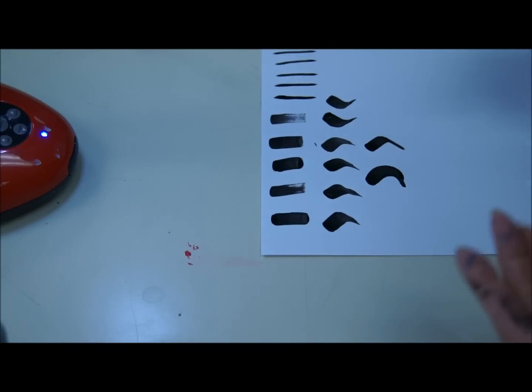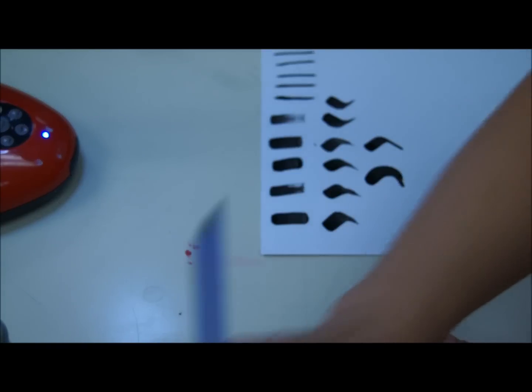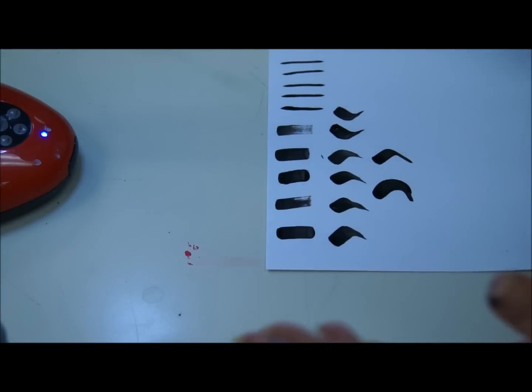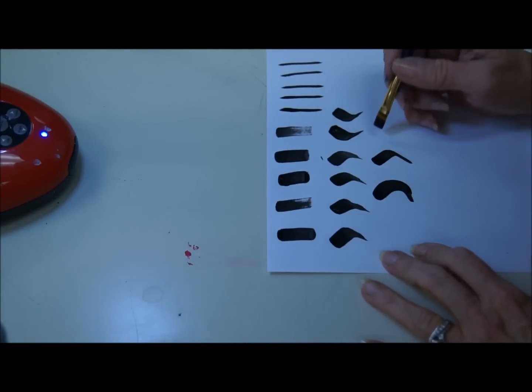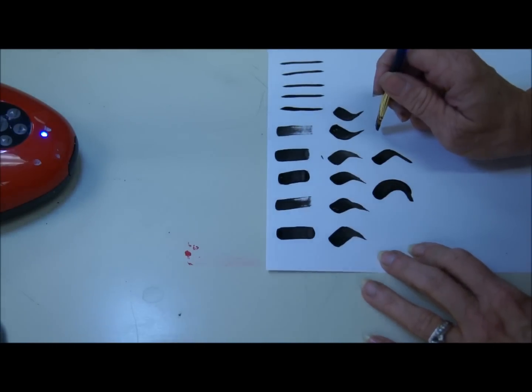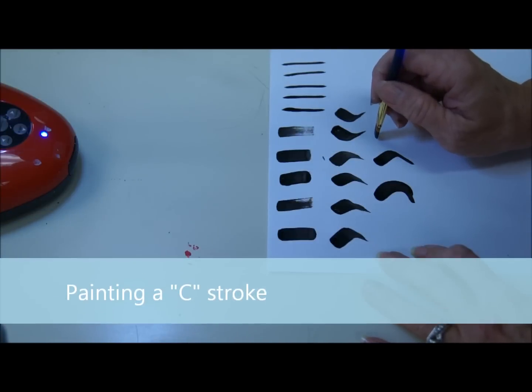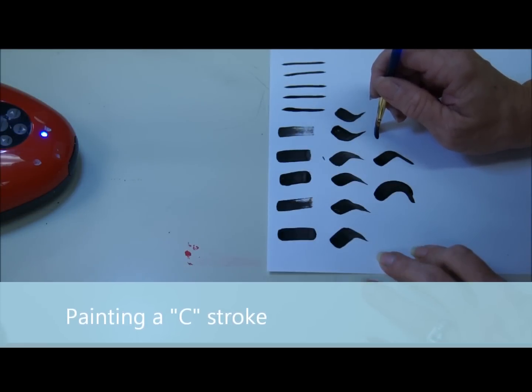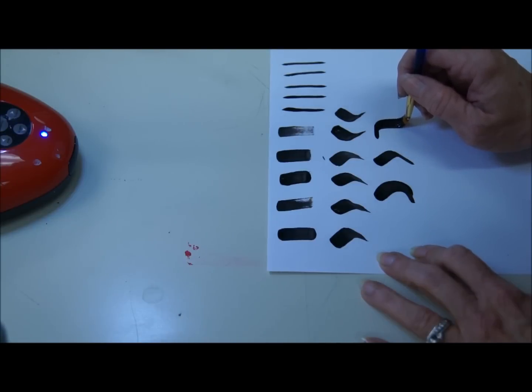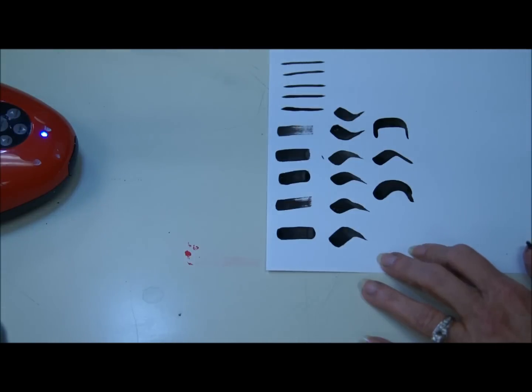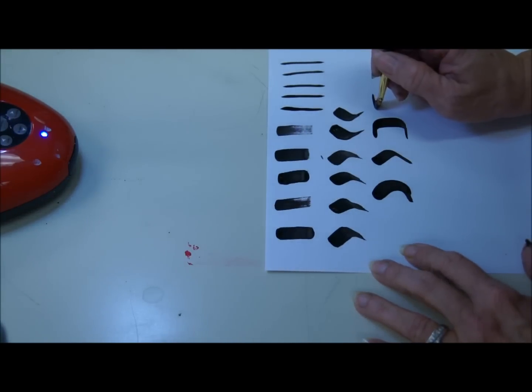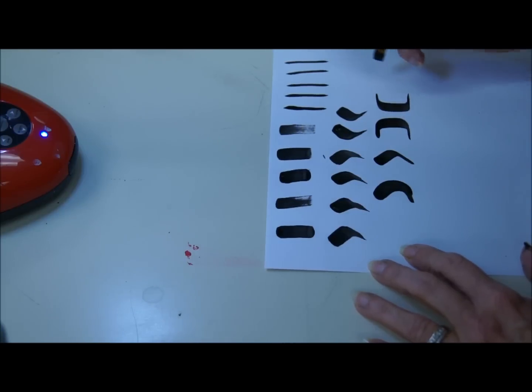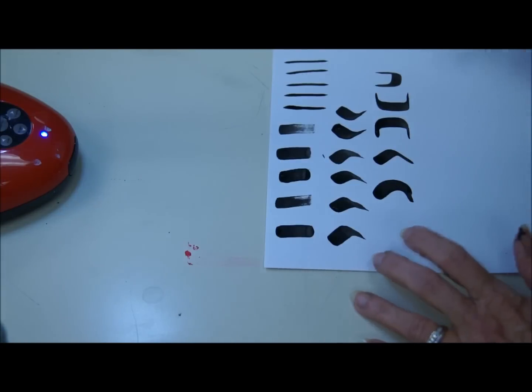Now, we can add another chisel to it, and we can paint something called a C-stroke. Guess what it looks like. A C. Oh my God, you're smart. So we're going to make it look like a C. This time, instead of at an angle, we're going to be horizontal to the top and bottom of the page. I'm going to paint with the chisel edge, and then I'm going to press straight down, and then I'm going to get back up on the chisel like that.